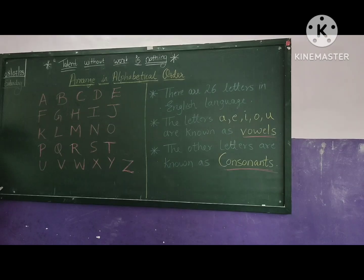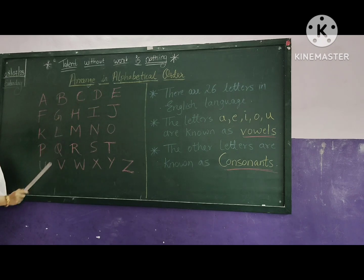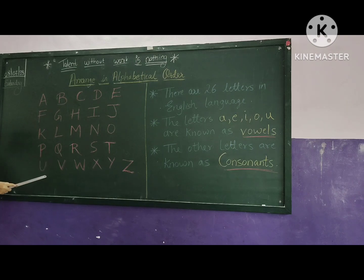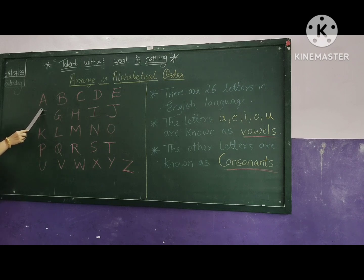Good morning children. Today I am going to teach you how to arrange in alphabetical order. First of all children, have you recognized what I have written on the blackboard? These are the letters in the English alphabet. First I am going to recite them so that you can understand the English alphabets.